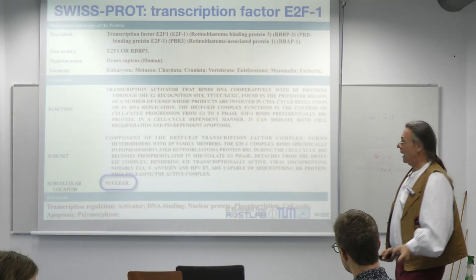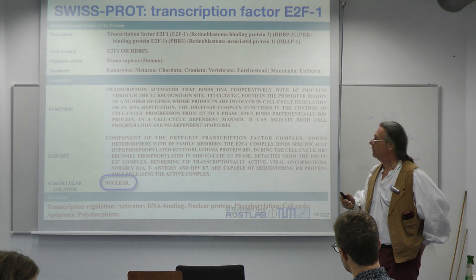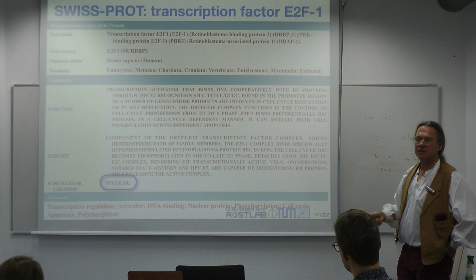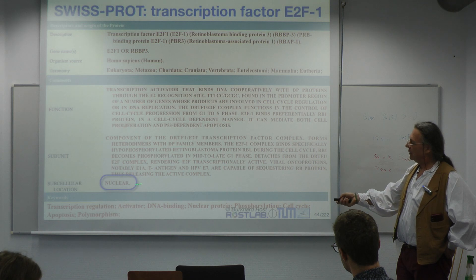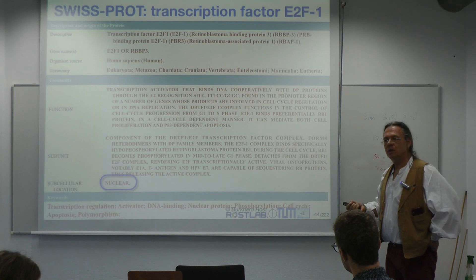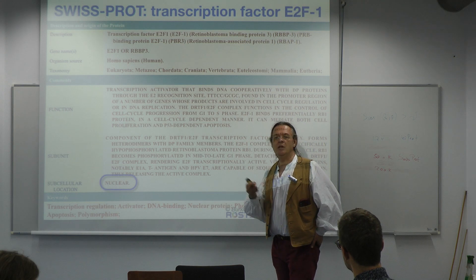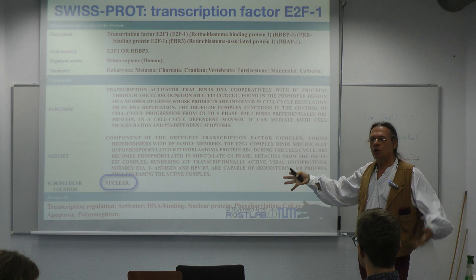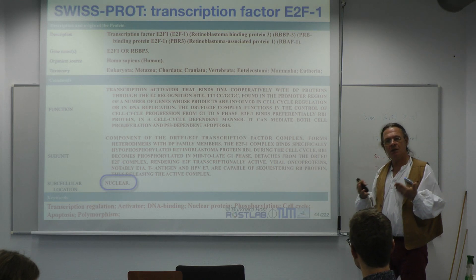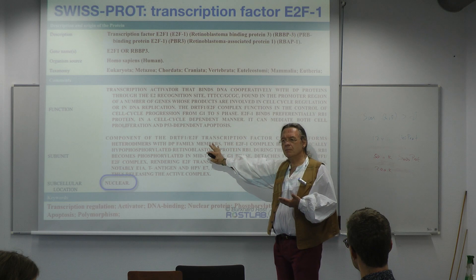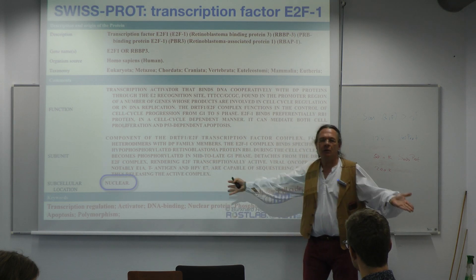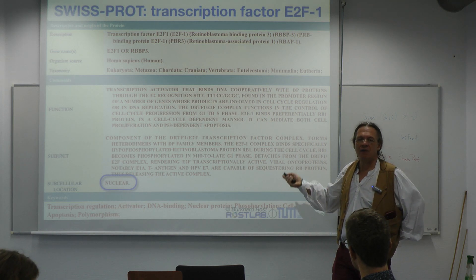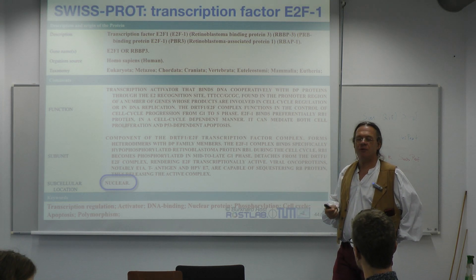Assume you had a SwissProt record such as this one. Somewhere there's a keyword for subcellular localization or location, and that one says 'nuclear.' Assume somebody removed that keyword — for instance, the annotator had not put the keyword there. So you want to develop a method that predicts subcellular localization. You read that SwissProt record, but you don't find the keyword. Can we not, from whatever else is in here, infer that the protein is nuclear?